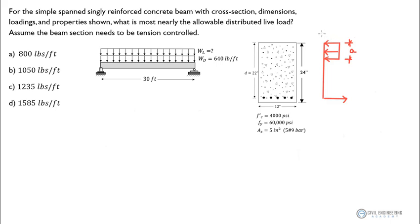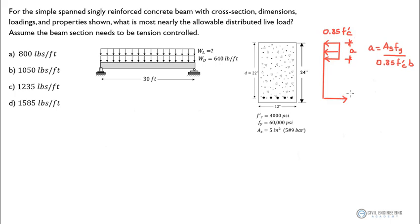The magnitude of this stress distribution we approximate to be 0.85 of F prime C. The distance A equals the area of the steel times the strength of the steel, F sub Y, all divided by 0.85 F prime sub C times B, the width of the beam. The tension portion of the section, handled by the rebar, amounts to F sub Y times the area of the steel. This is the idealized equivalent rectangular compressive stress block.